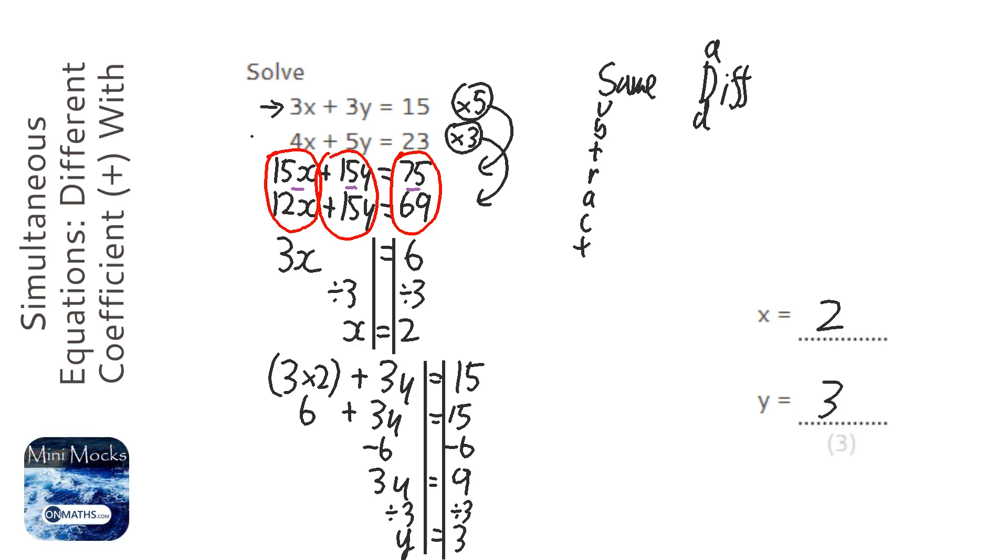You can check that in the second equation. 4 times 2 is 8. 5 times 3 is 15. 8 plus 15 is 23.